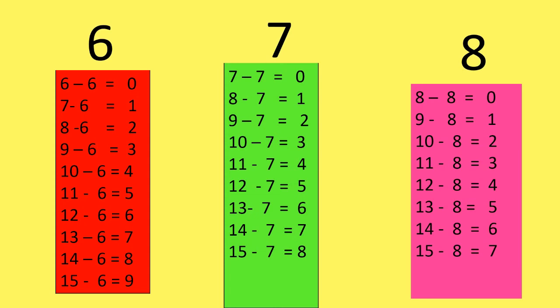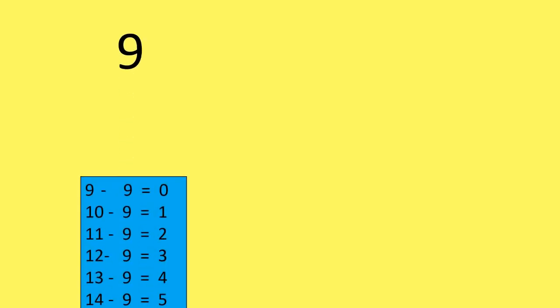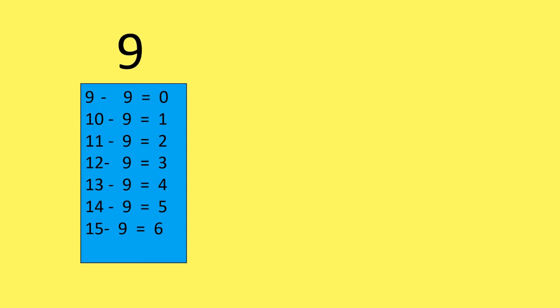Now let's revise the Subtraction Facts Table of 9. 9 minus 9 is equal to 0. 10 minus 9 is equal to 1. 11 minus 9 is equal to 2. 12 minus 9 is equal to 3. 13 minus 9 is equal to 4. 14 minus 9 is equal to 5. 15 minus 9 is equal to 6.